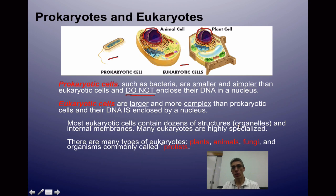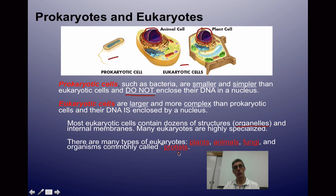Eukaryotic cells have many different cell parts called organelles. Many eukaryotes are highly specialized to perform certain functions for the organism they're found in. There are many types of eukaryotes — you find eukaryotic cells in plants, animals, and fungi. Some eukaryotic cells can also exist alone, and these are called protists or protozoans, which are considered single-celled creatures.